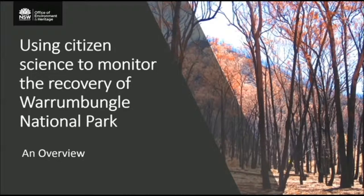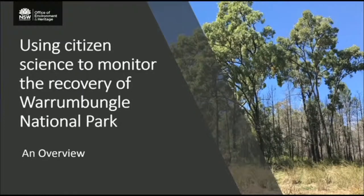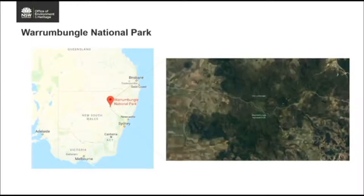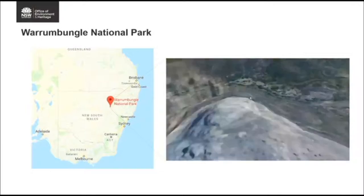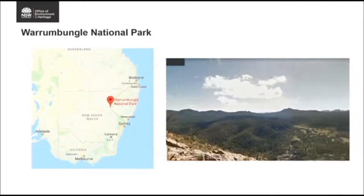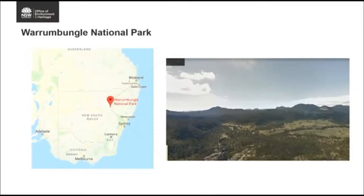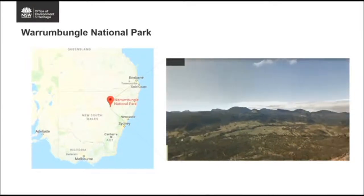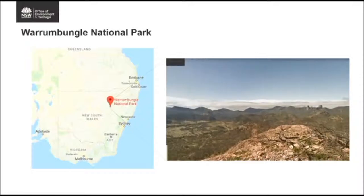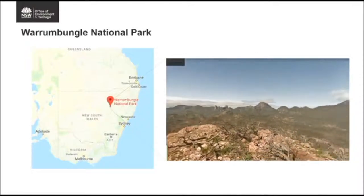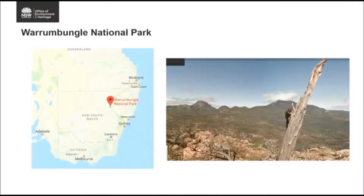Our next presentation takes us to Warren Bungle National Park, where we currently have three citizen science projects running to monitor the park's recovery post-fire and support management actions going forward. For those who haven't visited, it's located near Coonabarabin — about seven hours northwest of Sydney. The park hosts captivating volcanic geology, diverse flora and fauna, and many people travel there for camping and hiking.